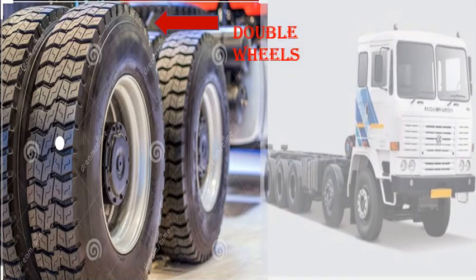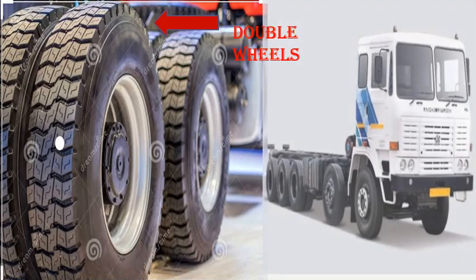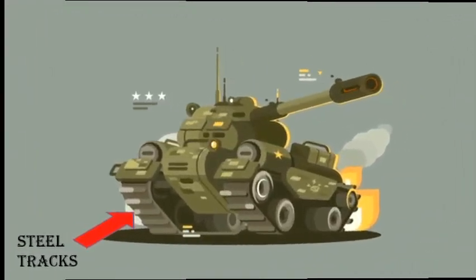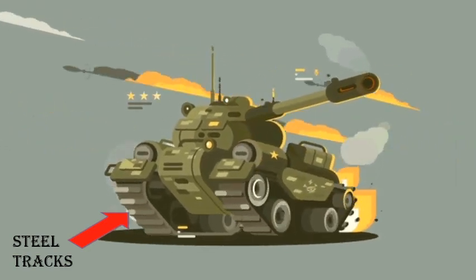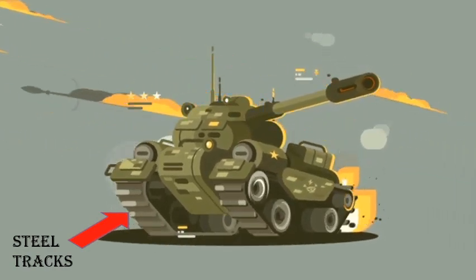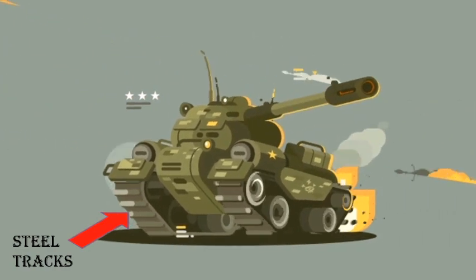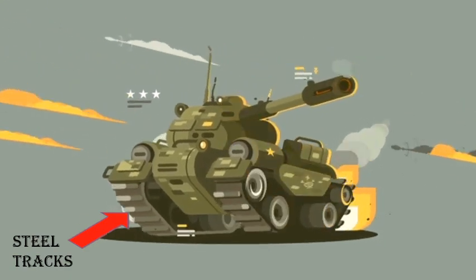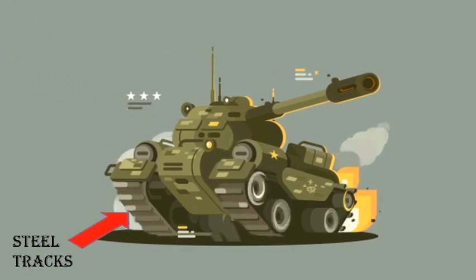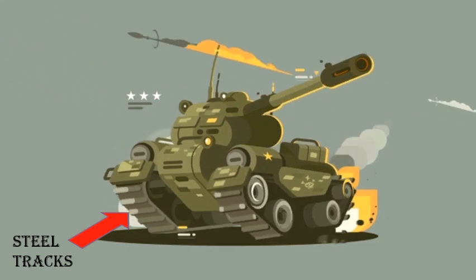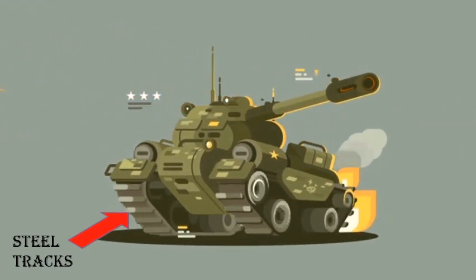It is for the same reason that tank trailers are provided with 16 wheels or more. Similarly, army tanks are made to move over broad steel tracks rather than on wheels. Because the broad tracks increase the area of cross section, and on increasing the area, the pressure decreases, reducing the pressure on the ground.